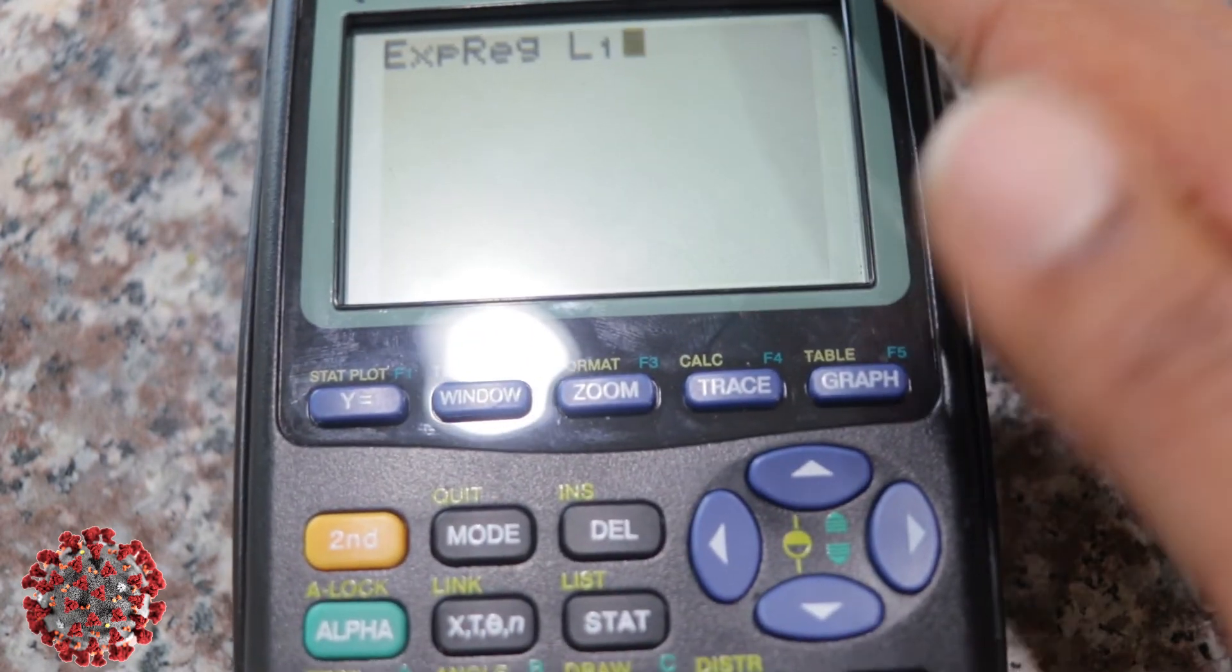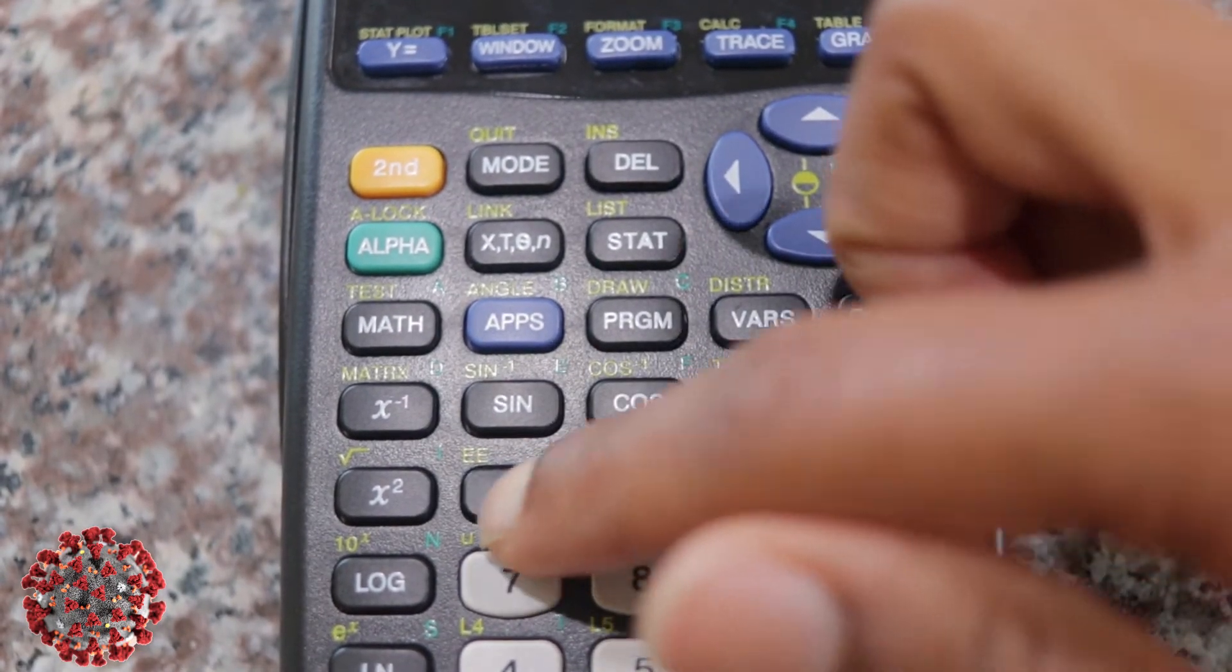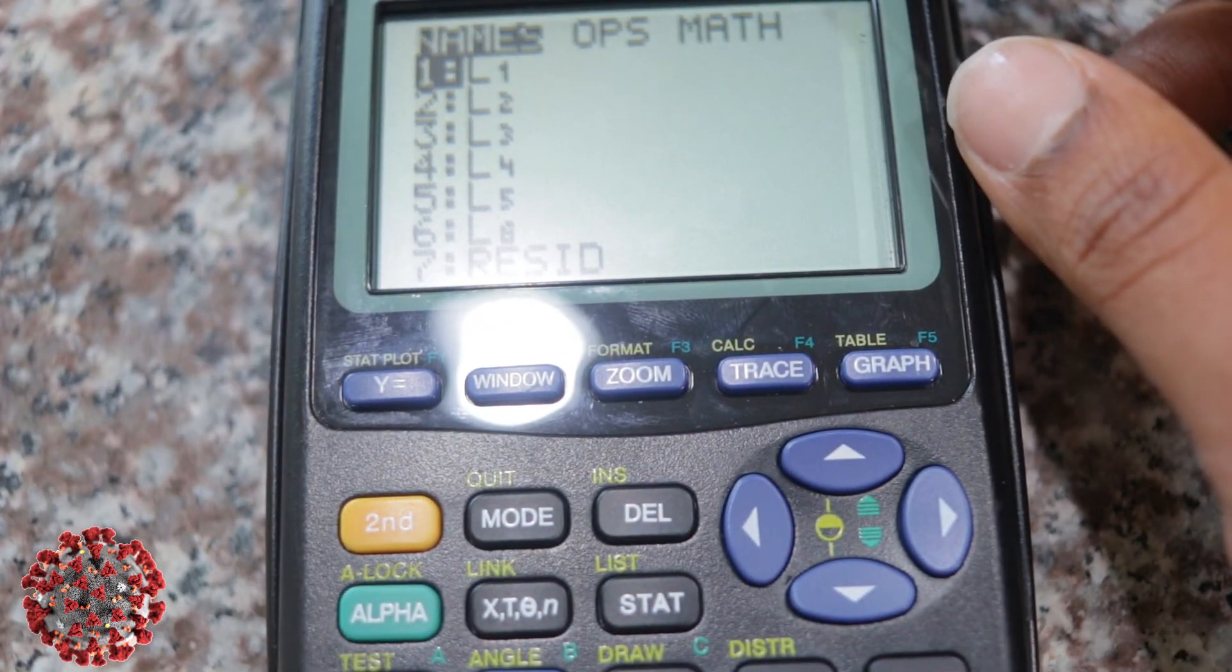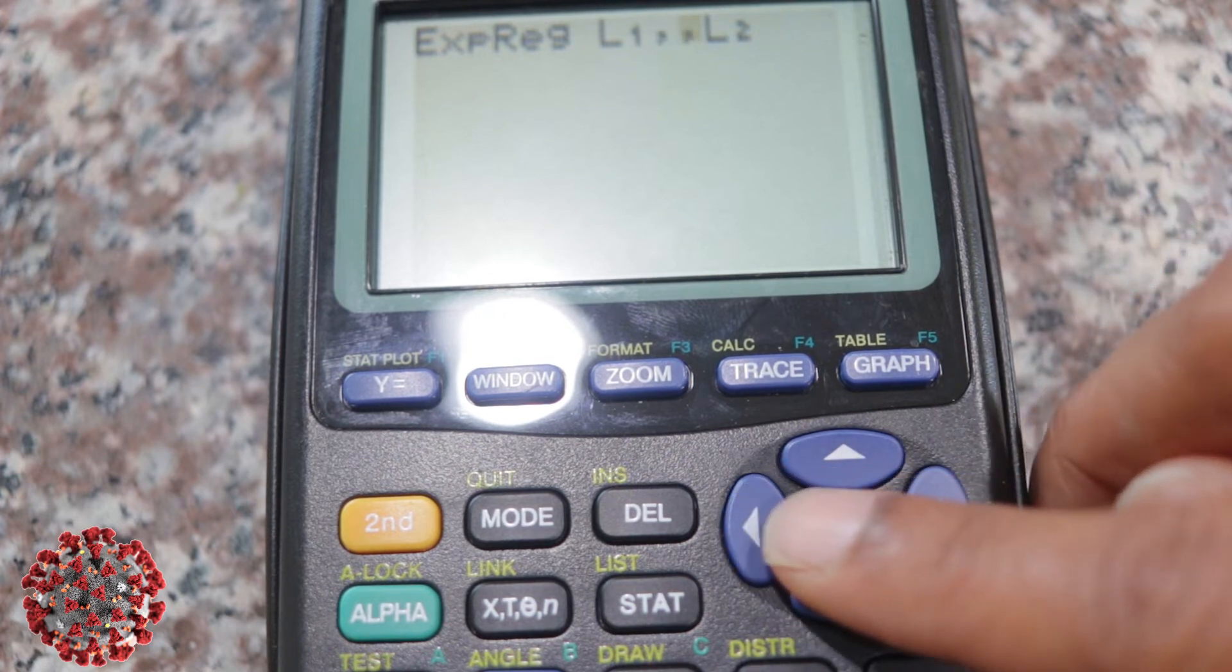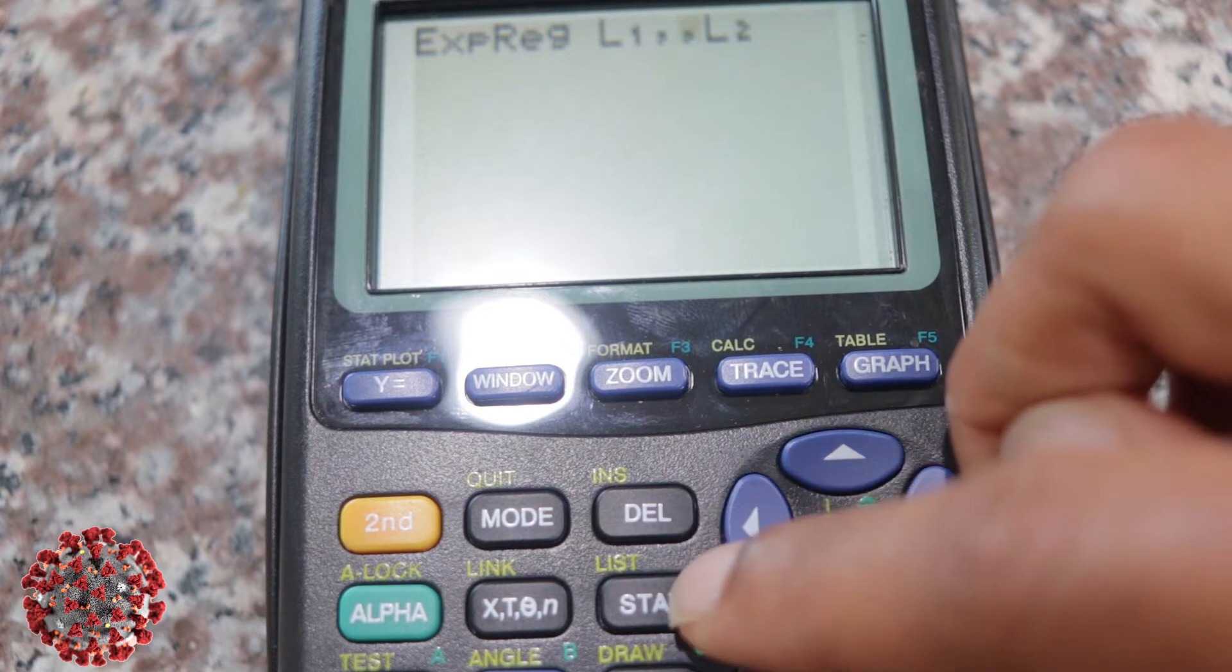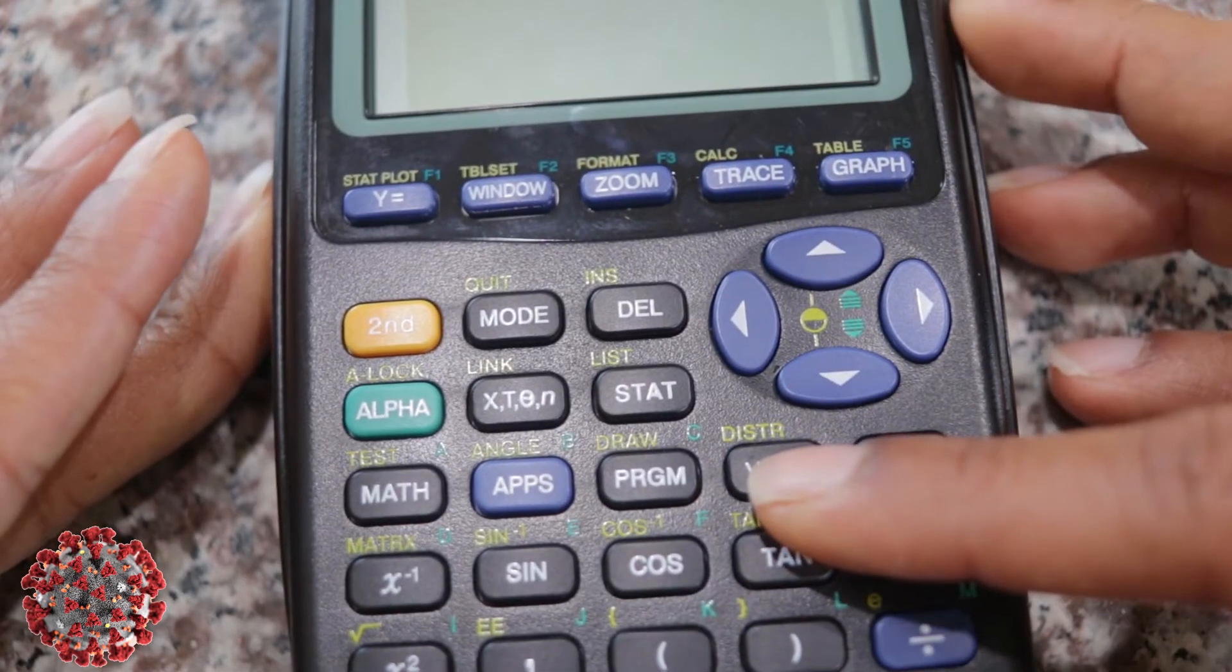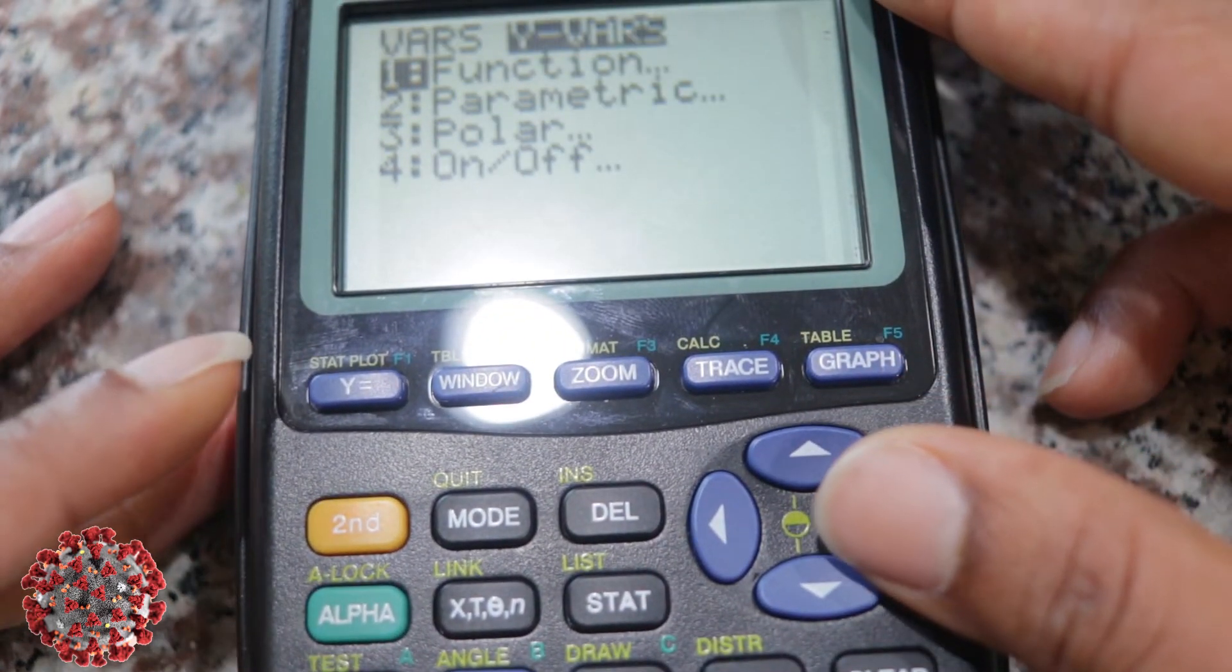And then I want to go back and put what I want my independent variable to be. So this time I'm going to go to second STAT, which is the LIST, and I'm going to number one. You can see it pops up L1. And then I'm going to put a comma. Then I'm going to put a comma, which is here. And then I'm going to go back to second STAT. And this time I'm going to go to L2, which is number two.